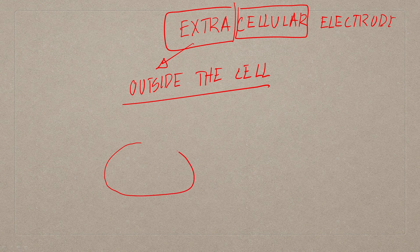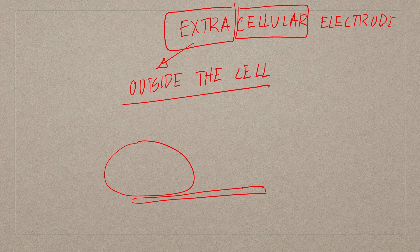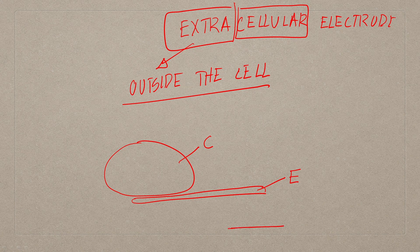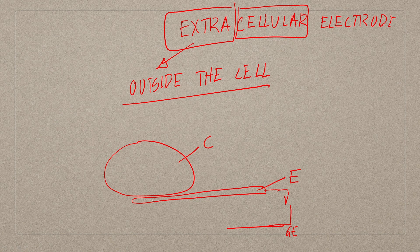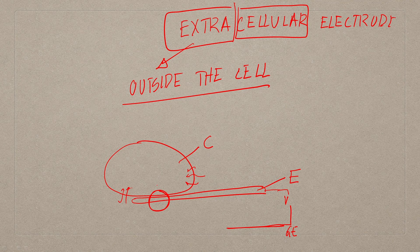This is a configuration where you are not invading the privacy of the cell. If this is the cell which is sitting, the electrode will be in its closest proximity. This is the electrode and this is the cell — C stands for cell, E stands for electrode. If this is the recording electrode, there will be another electrode in close proximity which will be the ground electrode, and you will be measuring the voltage across it.